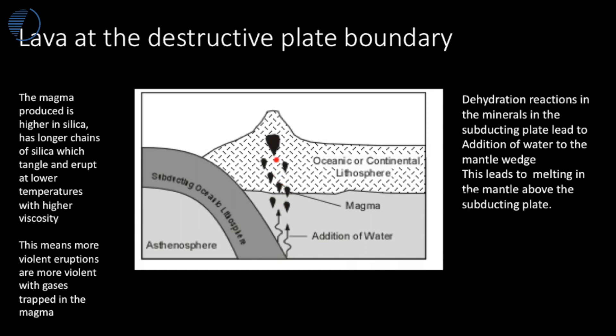The magma which is produced by this process is very viscous. It contains long polymerized chains of silica minerals and is often called rhyolite. Water and other gases are dissolved in these large magma chambers and the gases cannot easily escape. As pressure is reduced, those gases expand and form large bubbles in the magma, causing very explosive eruptions.